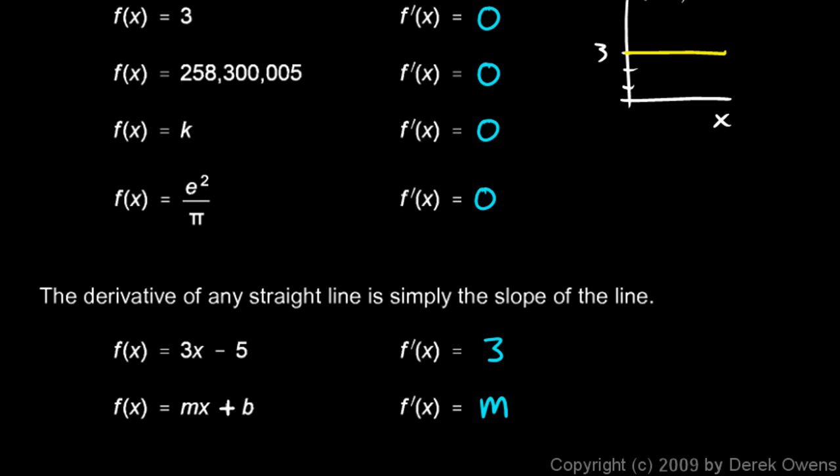It should be immediately clear to you that the slope of a constant function is 0. Or if it's a linear function and you have an equation for the line, the derivative is simply the slope of that line.